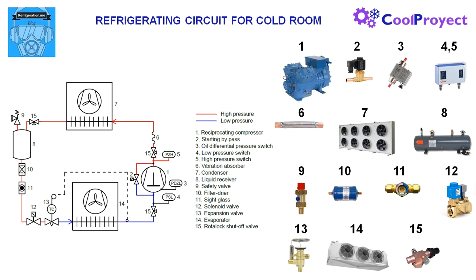For the bypass device we use normally a small solenoid valve. In number 3 we have the oil differential pressure switch. This is a protection device that switches off the compressor if there is a lack of oil in the crankcase or if the oil pump is broken. This device works by differential pressure between suction and discharge of the pump. We have an oil pump normally in compressors of more than 10 horsepower. In less powerful compressors we don't have this safety device, but some manufacturers like Bitzer have an optical or infrared device to control oil presence in the crankcase.